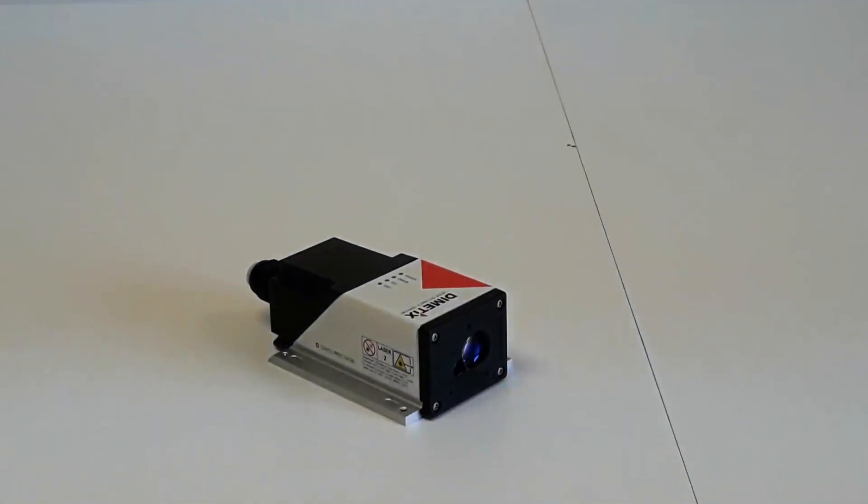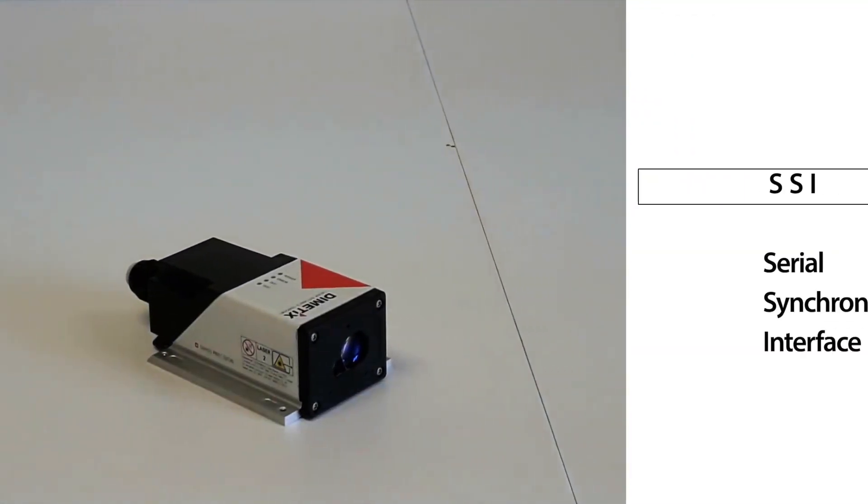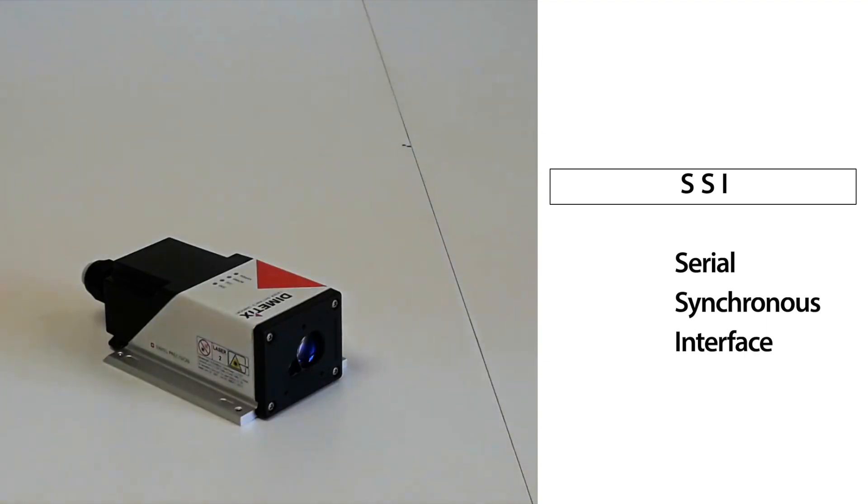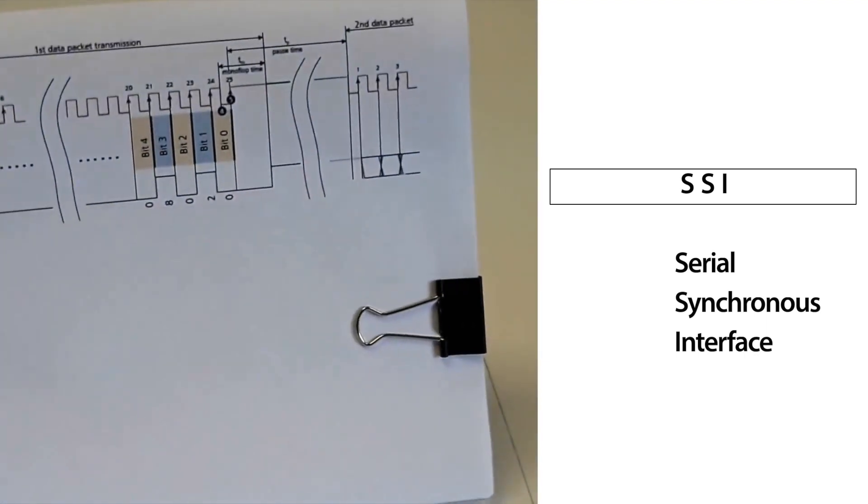One common communication protocol used with wheel encoders is SSI, which stands for Serial Synchronous Interface.